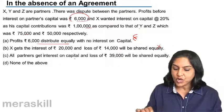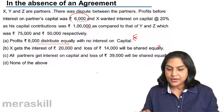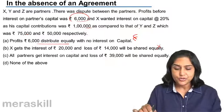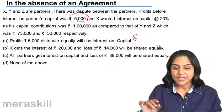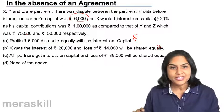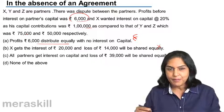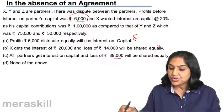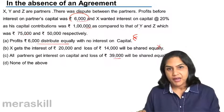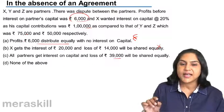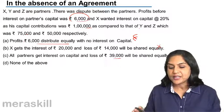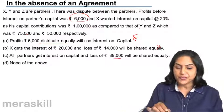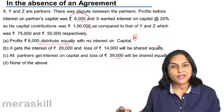Option C states that all partners get interest on capital. If all partners are to get interest on capital at the rate of 20% on 1 lakh plus 75,000 plus 50,000, the amount of profit is only 6,000. When you deduct the interest on total capital, there would be a loss of 39,000. We had already discussed that profit sharing ratio has to be equal and no interest is payable on capital. So, Option A is the correct option — profits of 6,000 distributed equally with no interest on capital.